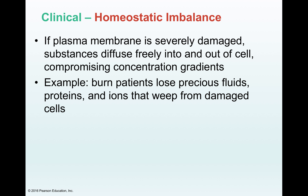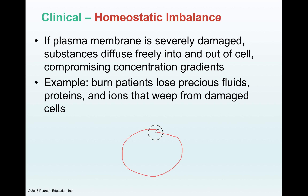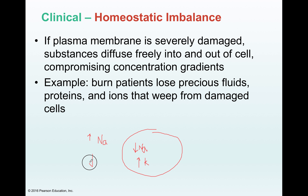An example is the concentration gradient that exists for sodium and potassium on either side of the membrane. You have high concentration of sodium outside the cell and low concentration inside, while potassium has high concentration inside the cell and low concentration outside. This is the gradient that exists because of the plasma membrane. If the plasma membrane is damaged, this concentration gradient is removed, and as a result the cell will not be able to survive.